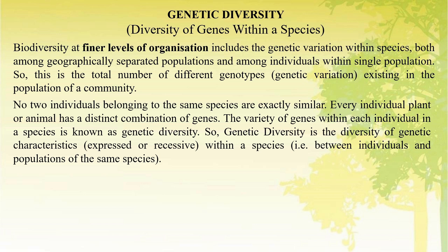No two individuals belonging to the same species are exactly similar. Every individual plant or animal has a distinct combination of genes. The variety of genes within each individual in a species is known as genetic diversity. Genetic diversity is the diversity of genetic characteristics, expressed or recessive, within a species — that is, between individuals or populations of the same species.